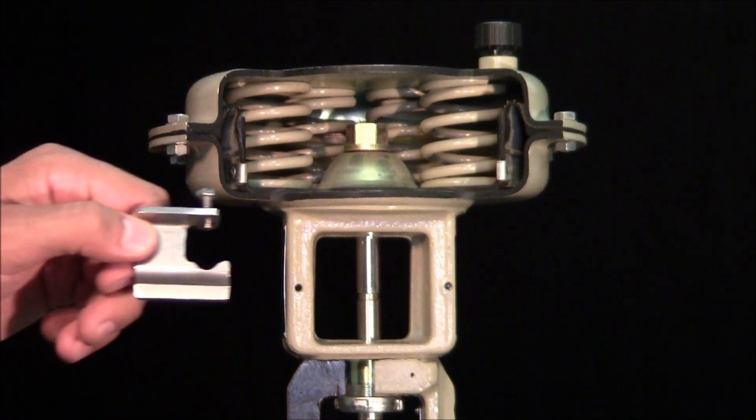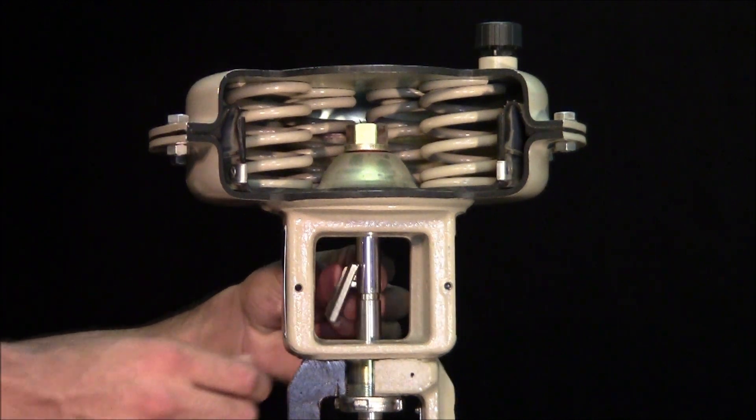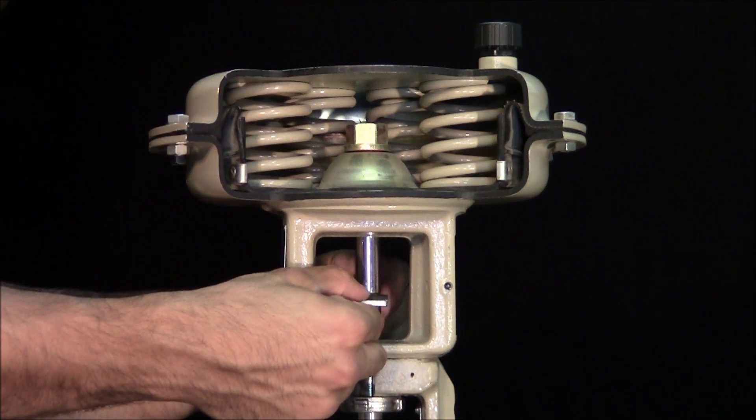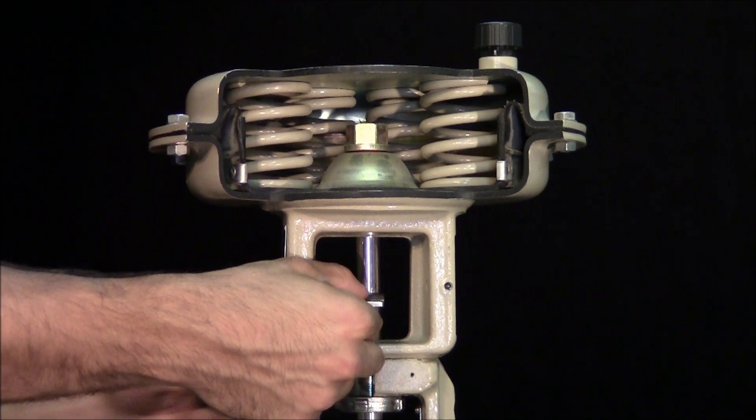We'll begin by attaching the follower clamp to the actuator, making sure the screw is located in the grooved area of the stem. The clamp is installed with the opening on the right-hand side.